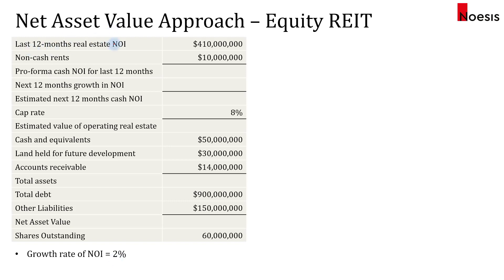The NOI given is for the last 12 months — this is historical. We are going to calculate the pro forma cash net operating income for the next 12 months, which is the NOI in year one for the coming year. When you have non-cash rents, we have to remove it from the NOI, so we minus that off, giving us 400 million. The growth for the next 12 months is assumed to be 2%, so 2% times 400 million equals 8 million, giving us 408 million for the next 12 months.